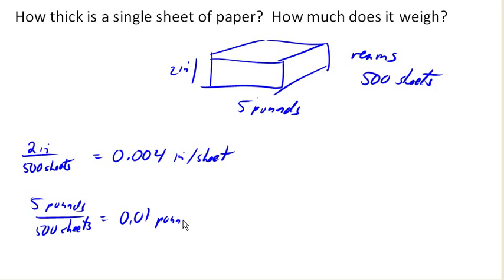You know, and if you don't like pounds, we could also do a unit conversion here and say 16 ounces is one pound, and end up with 0.16 ounces per sheet, if you'd prefer the answer in ounces.